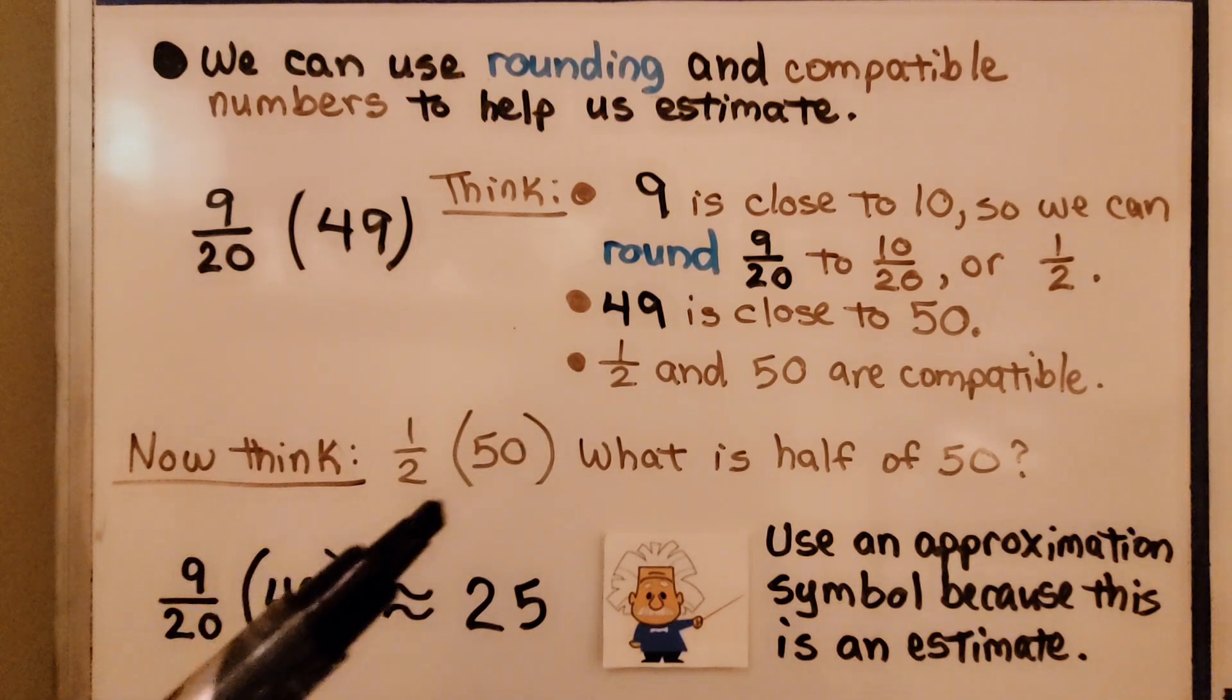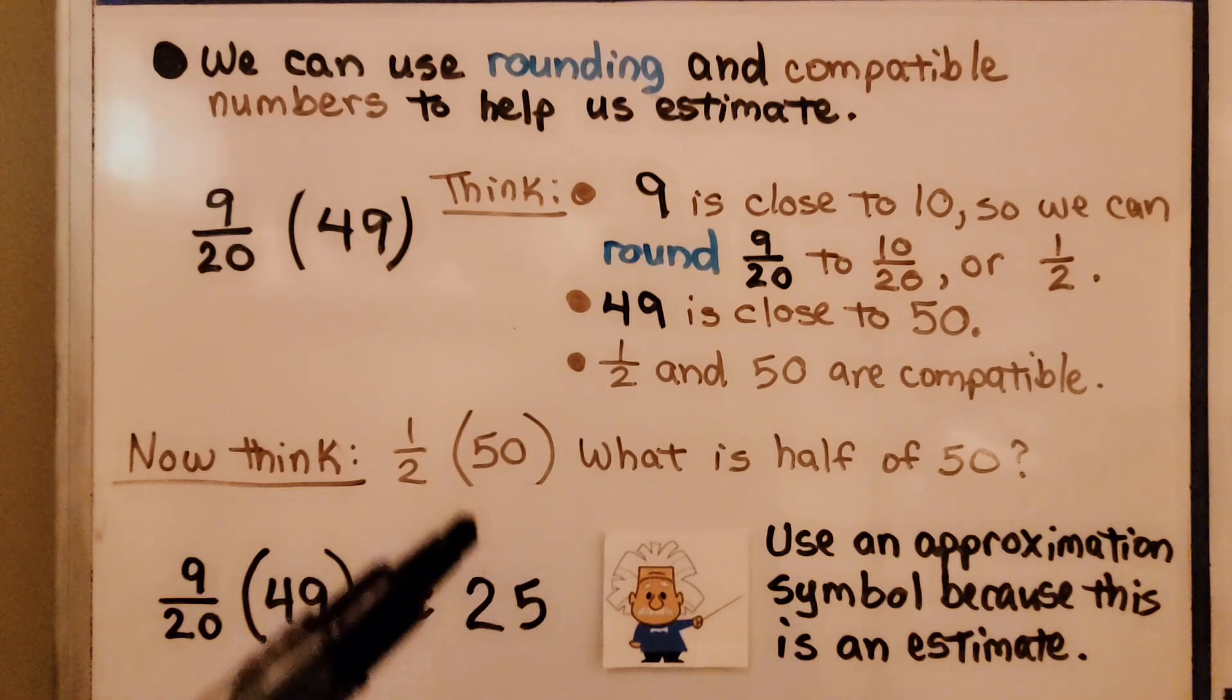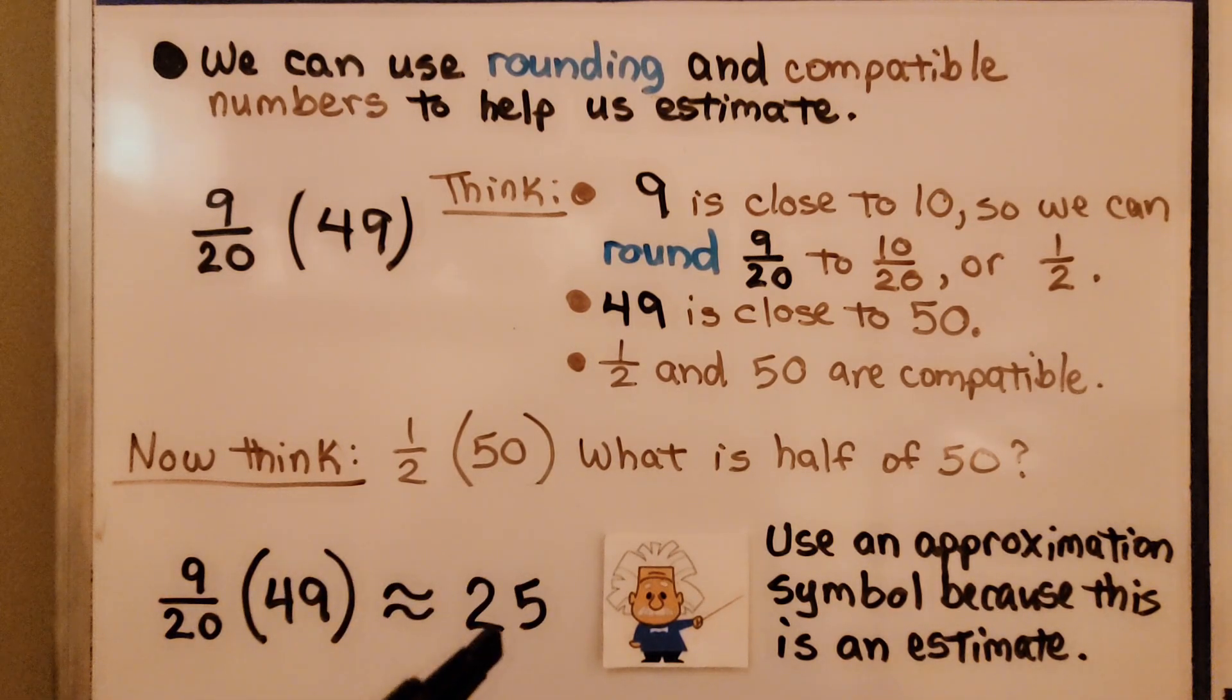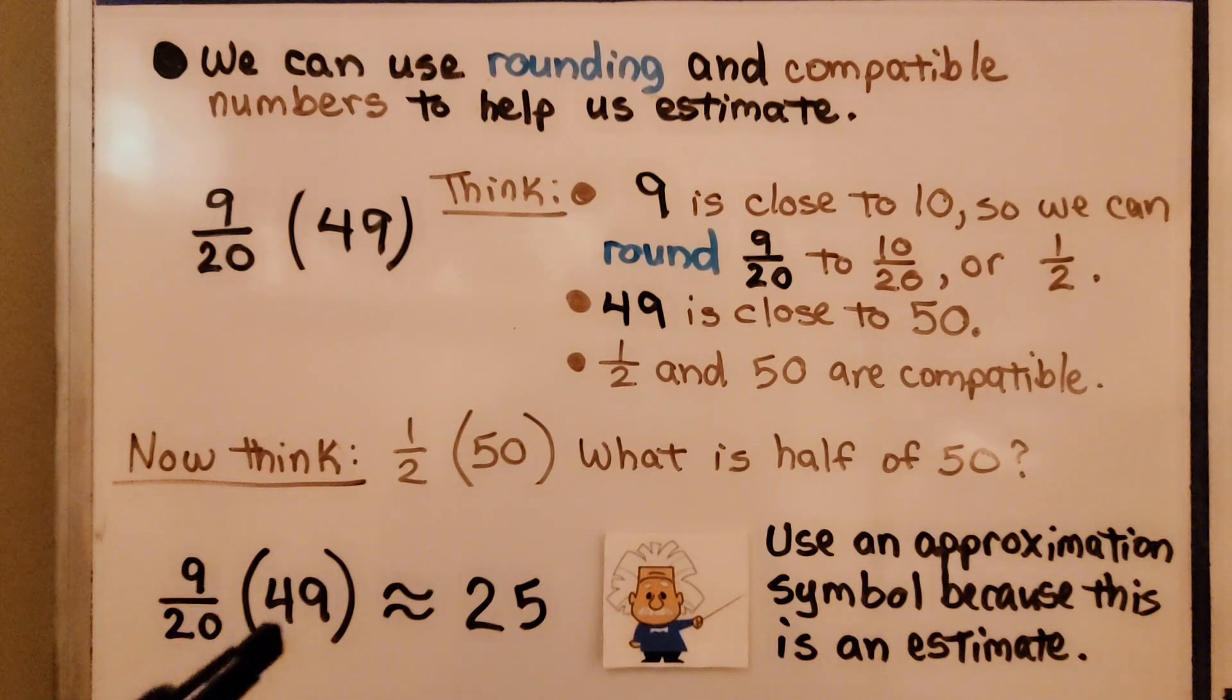Now we think, what's 1/2 times 50? What is half of 50? Well, half of 50 would be 25. We can say 9/20 times 49 is approximately 25.